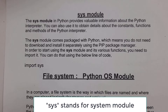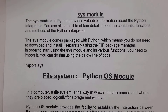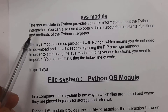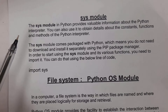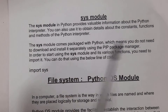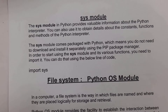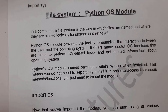The sys module is a predefined module in Python — this module is already present in Python, so there is no need to separately install it. This sys module provides information about the Python interpreter. Using the sys module we can also find information about constants, functions, and methods present in the Python interpreter. To use the sys module, you just write 'import sys' in Python.